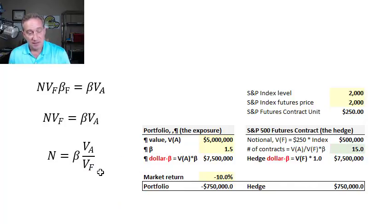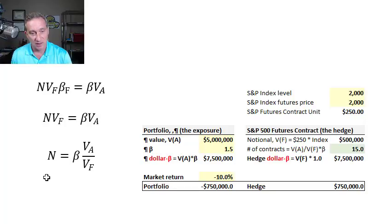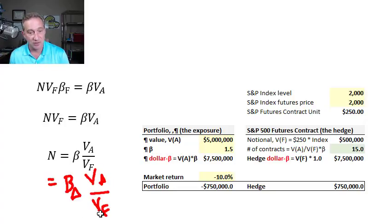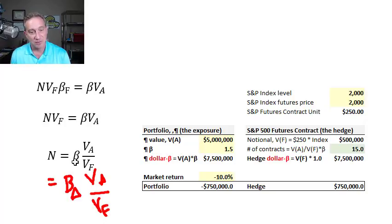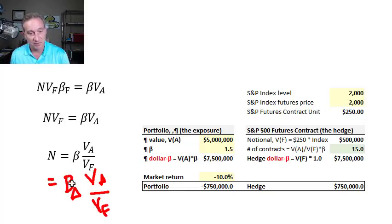This is a special case because we're talking about neutralizing beta completely. We can generalize this to the formula for a change in beta, because maybe you don't want to neutralize beta to zero — maybe you just want to reduce beta from 1.5 to 0.5. So we replace beta with delta beta, the change in beta. That works here too; we can use the delta beta in the formula.